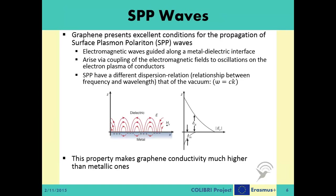Once launched, these SPP waves ripple along the metallic-dielectric interface and do not stray from this narrow path. Compared with the incident light that triggers the transformation, the SPPs can be much shorter in wavelength. When SPs couple with a photon, the resulting hybridized excitation is called an SPP. This SPP can propagate along the surface of a metal until energy is lost, either by absorption in the metal or radiation into free space. The fact that graphene exhibits the propagation of SPP waves increases its conductivity much higher than metallic antennas.